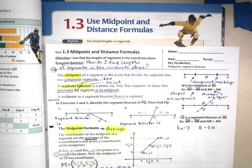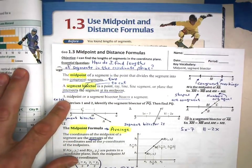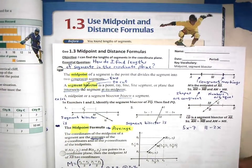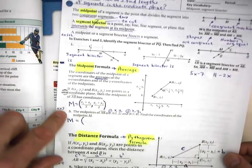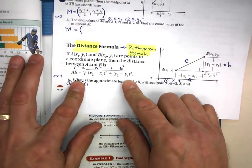Welcome to 1.3, midpoint and distance formulas. So this shouldn't be too bad. This is pretty quick, right? There's just two main formulas, this midpoint formula and this distance formula.